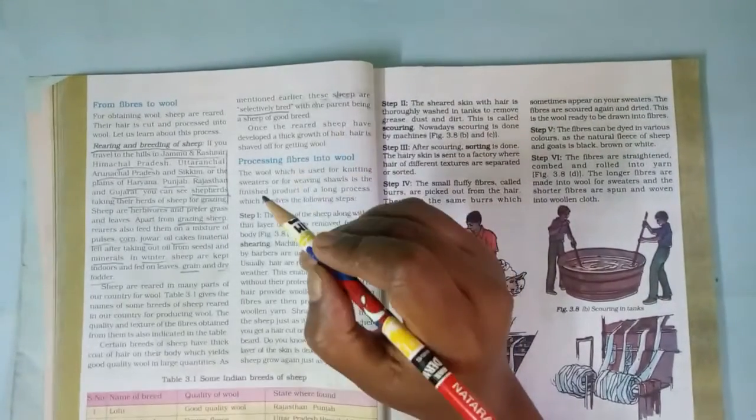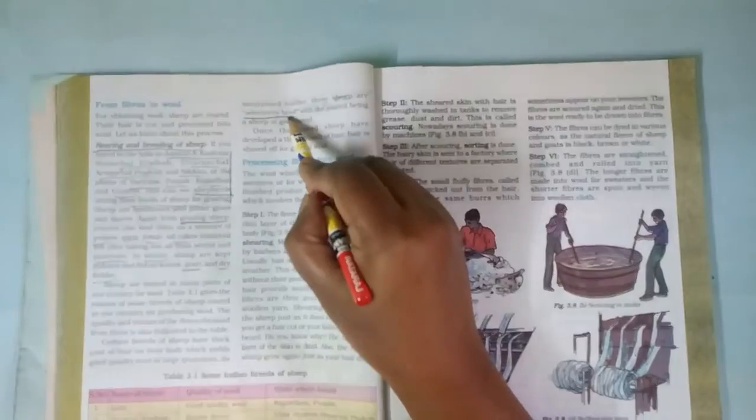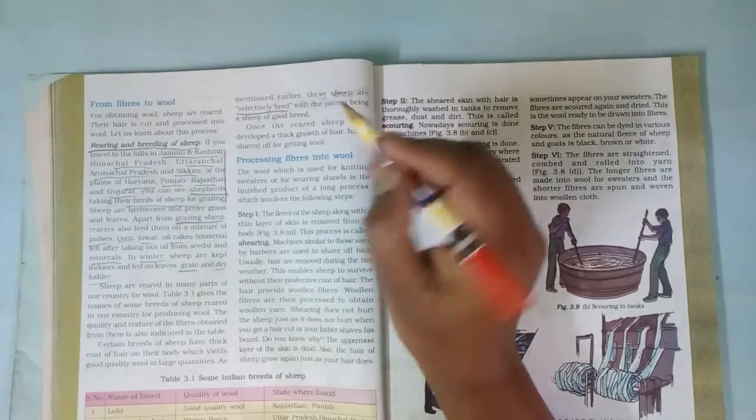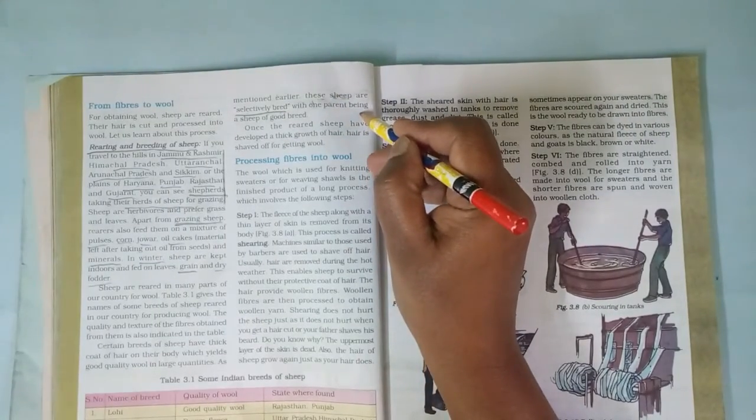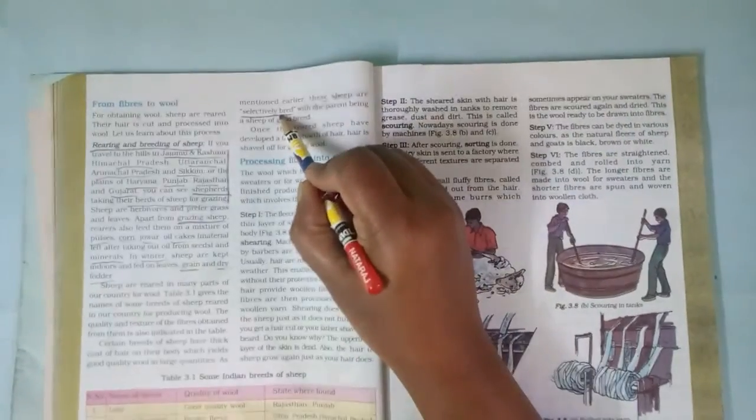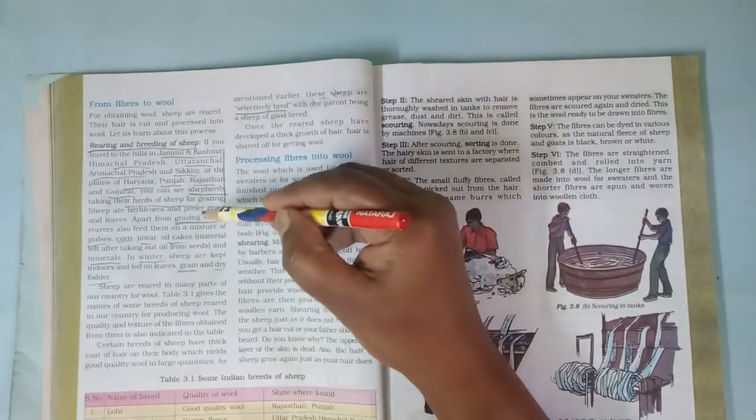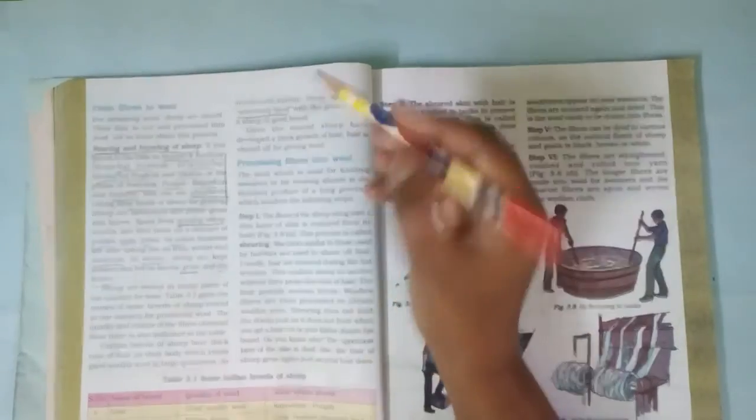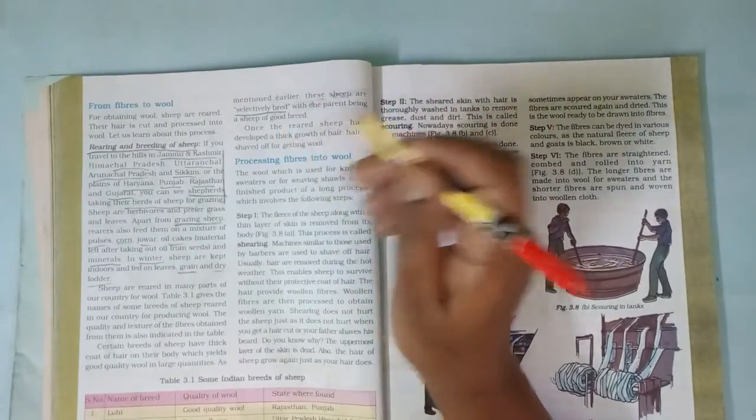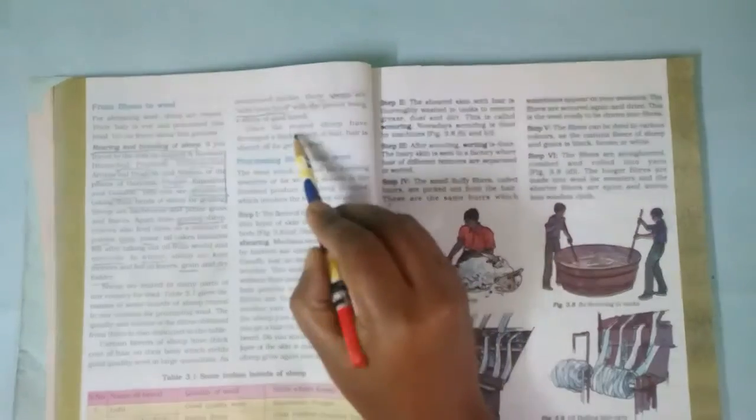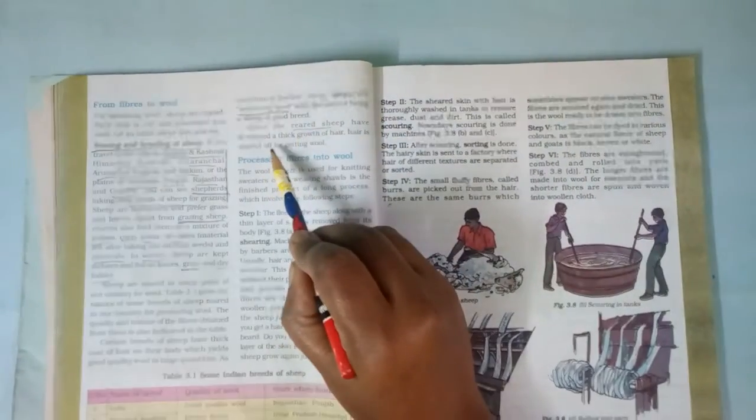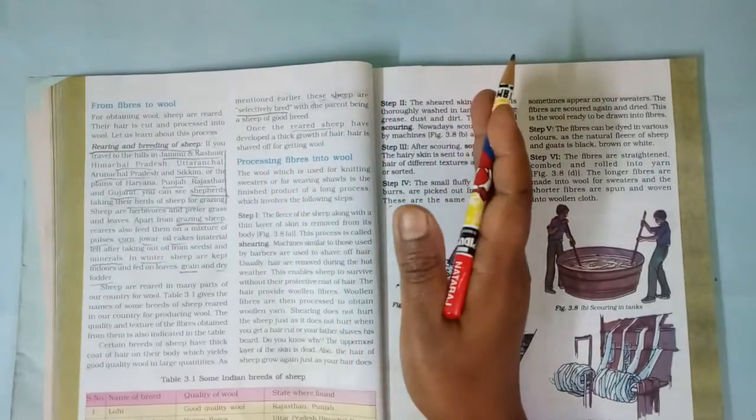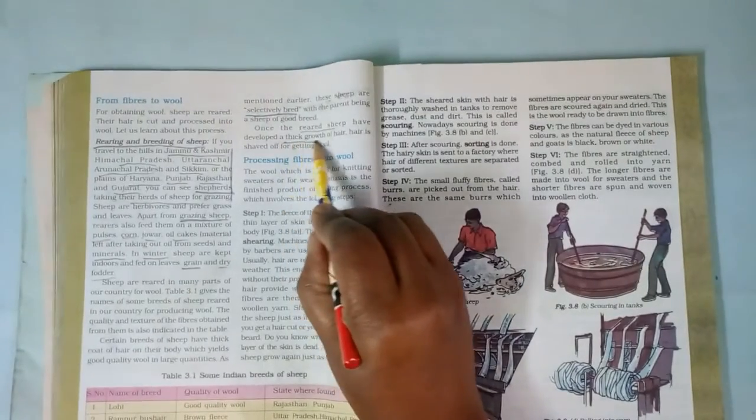That should be selected for breeding purposes, so we call it selective breeding. We select at least one of the parents to be of that species. Apart from food and location, the breeding process also matters for wool production. Only such types of sheep will be reared and taken care of. Once the reproduction or breeding is done, we will get a thick growth of hair on them.